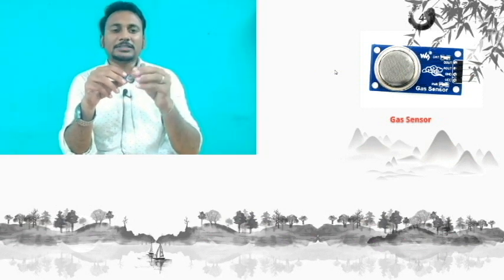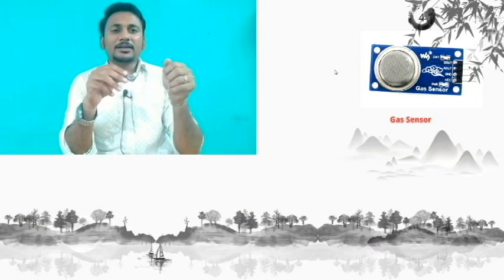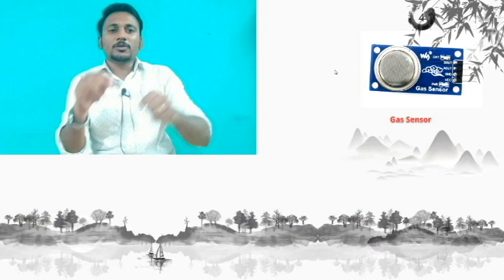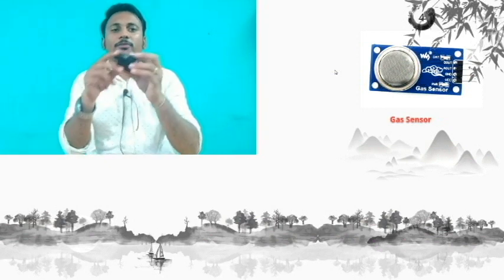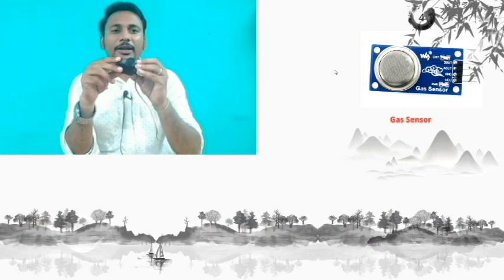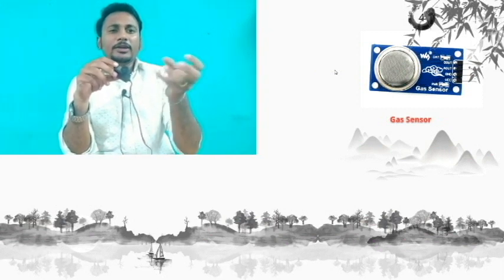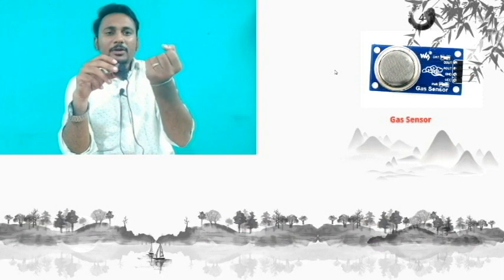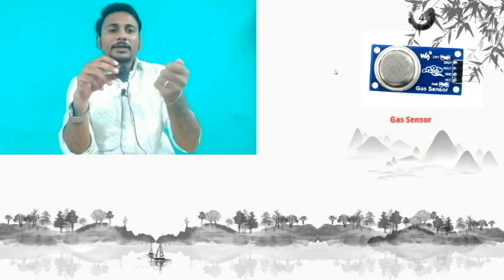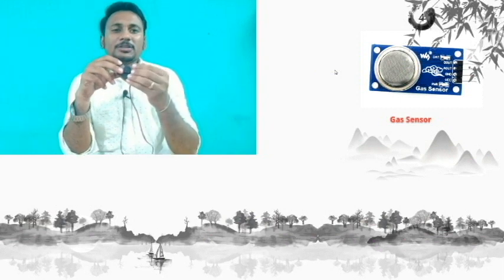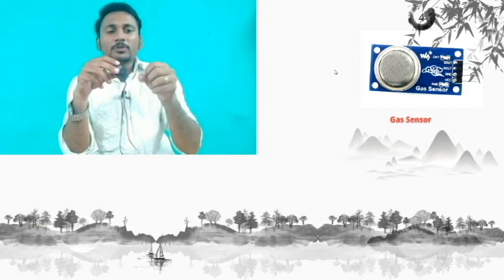If a gas leak is detected, I am going to fix a servo motor. I am going to set the servo motor to some degree — 90 degrees or 180 degrees — and it will rotate. If there is a gas leak, the servo motor will automatically operate and the knob will close. So, leakage of gas is stopped.